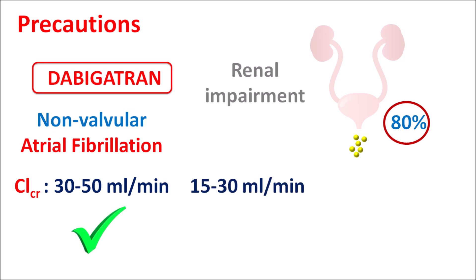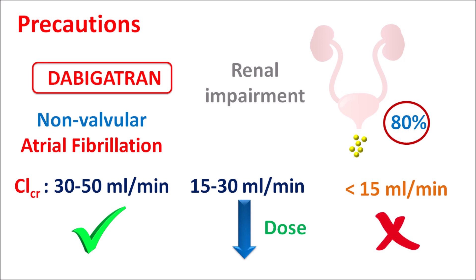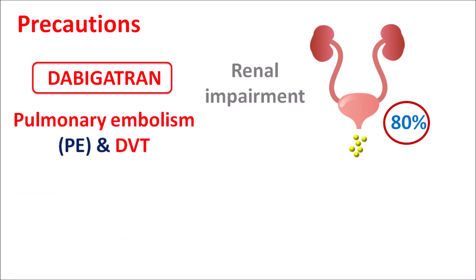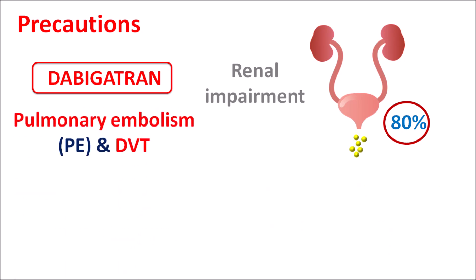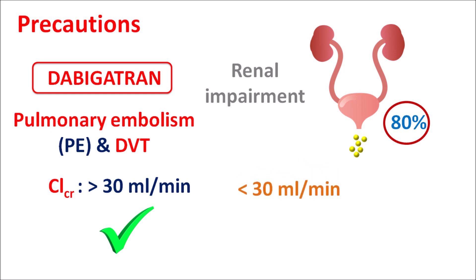When creatinine clearance is between 15–30 mL/min, the dose should be reduced by half. In patients with creatinine clearance less than 15 mL/min, this drug should be avoided. For pulmonary embolism and deep vein thrombosis, the dosage adjustment is somewhat different: in patients with creatinine clearance greater than 30 mL/min, no dosage adjustment is required, but in those with creatinine clearance less than 30 mL/min, this drug should be avoided.